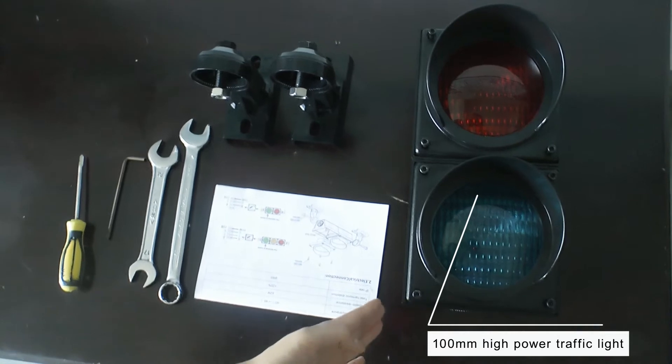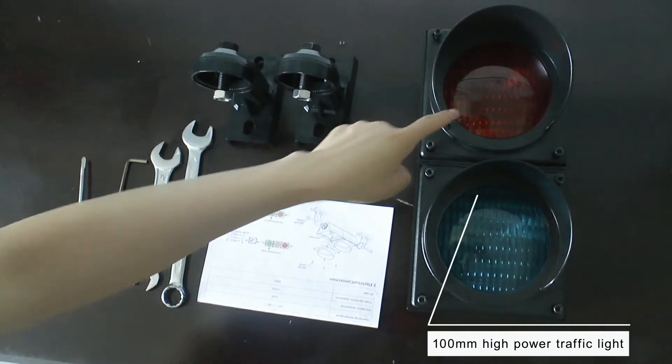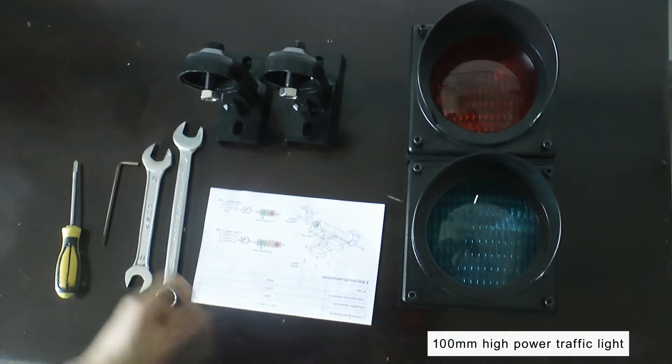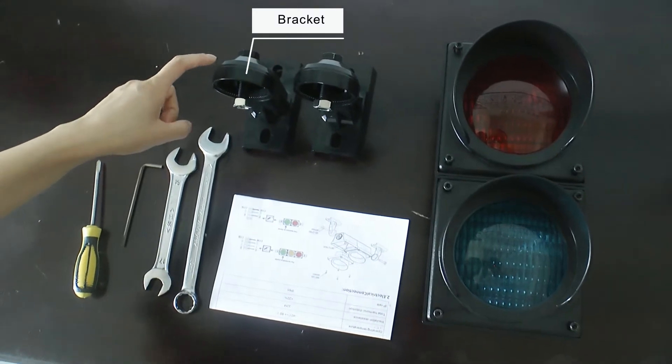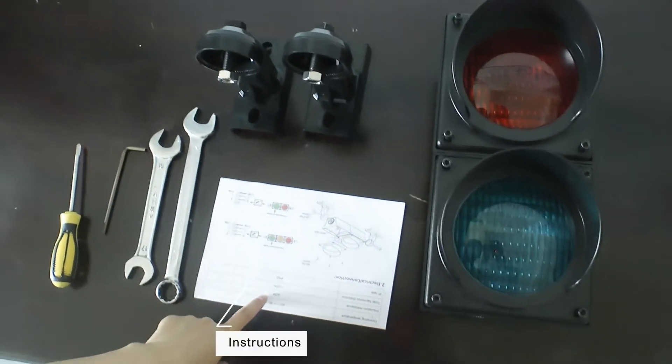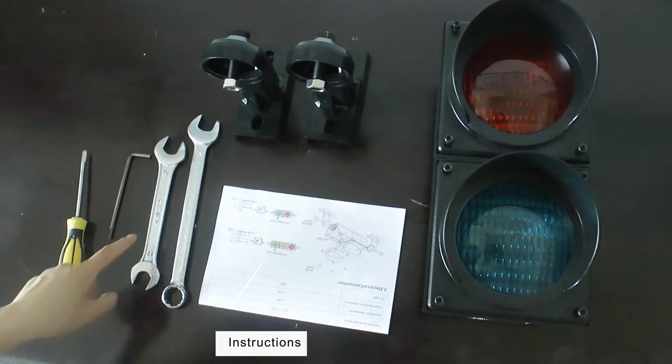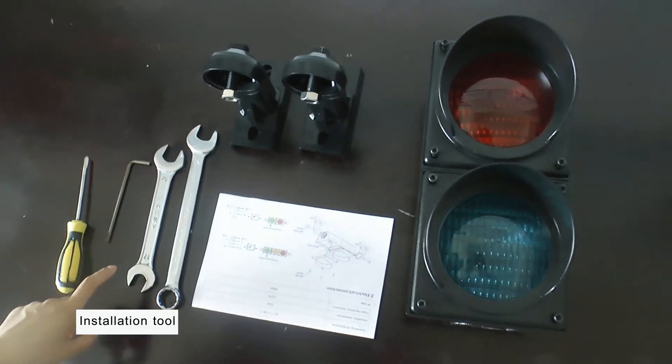Hello, this is the 100 high-flux traffic light with red and green, two-piece C-shaped brackets, one-piece user manual, and these are four screws for installation.